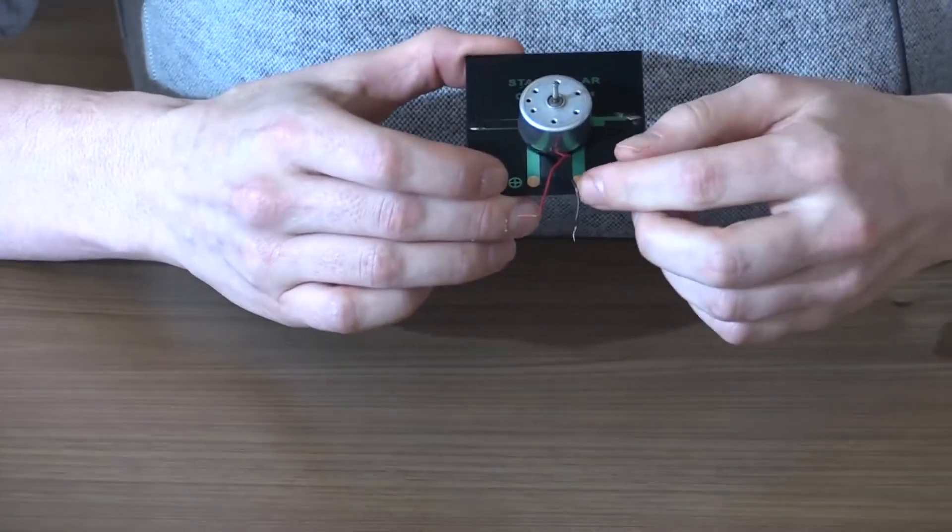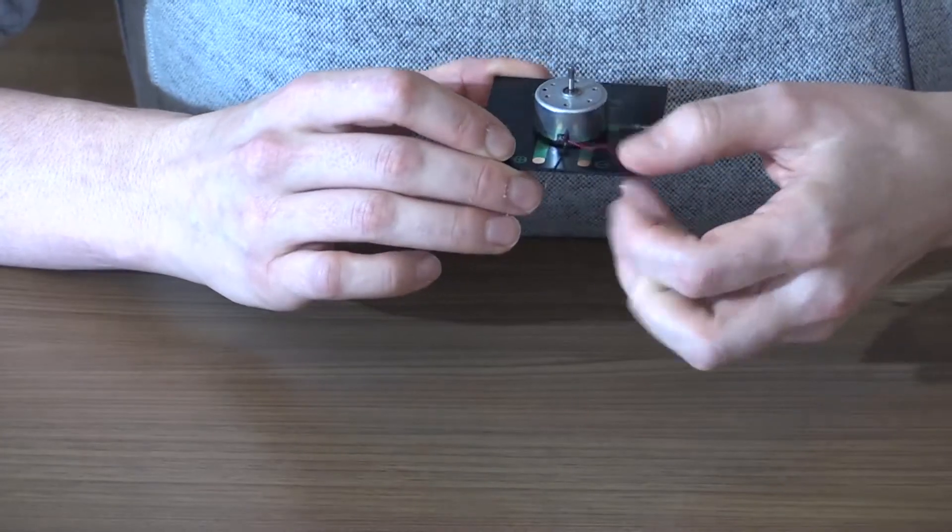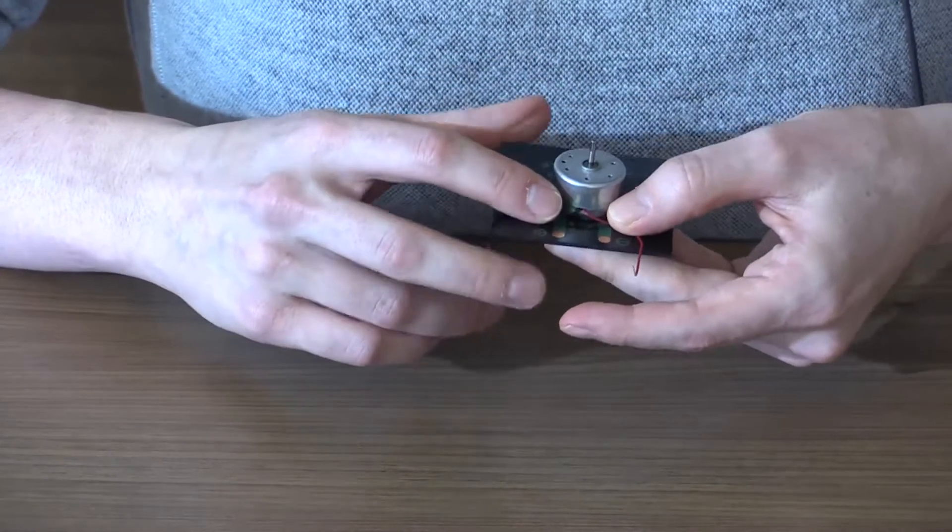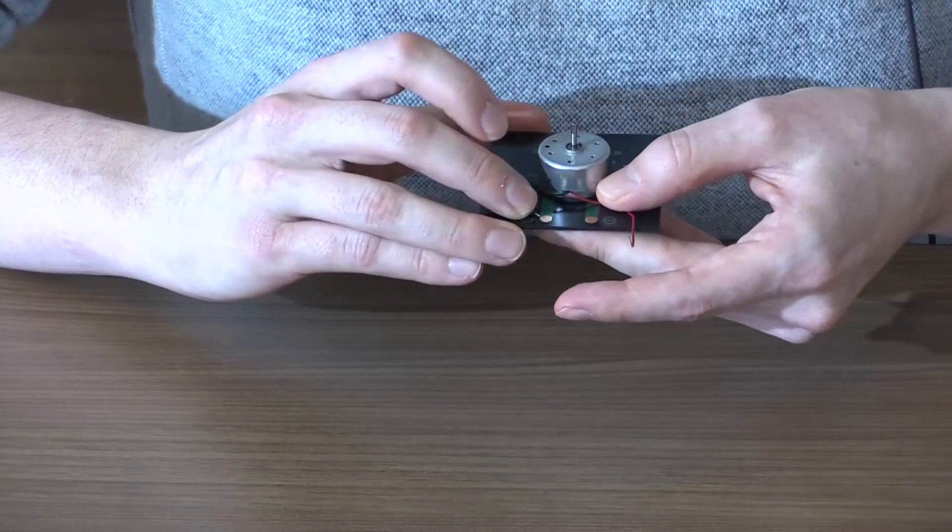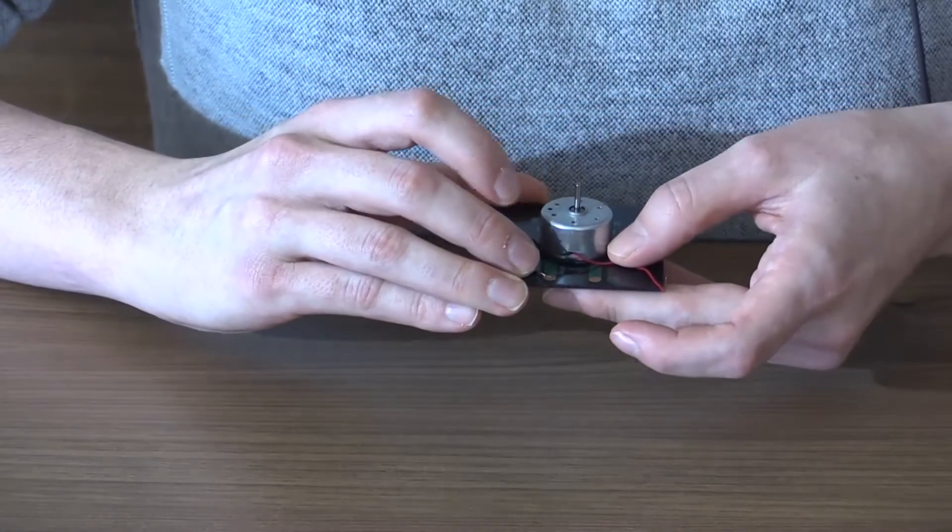You'll notice that your motor has two wires, one's red and one's black. The direction of the wires doesn't affect whether this works or not. It will just change the direction in which the solar spinner spins.